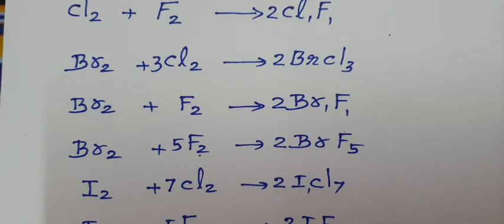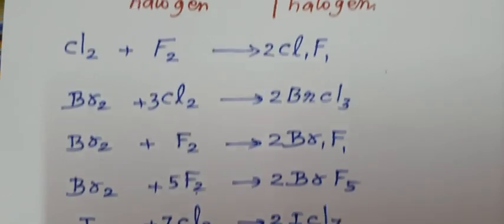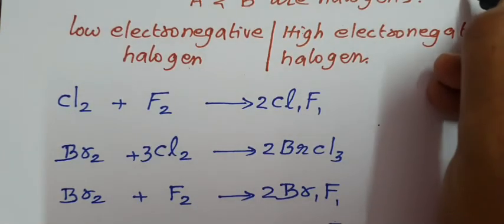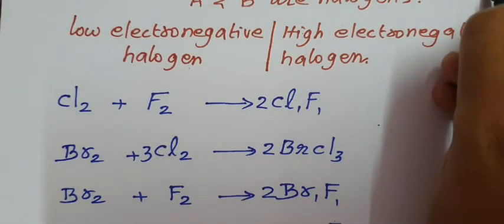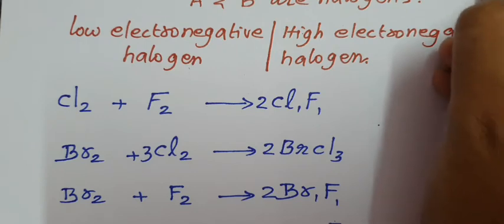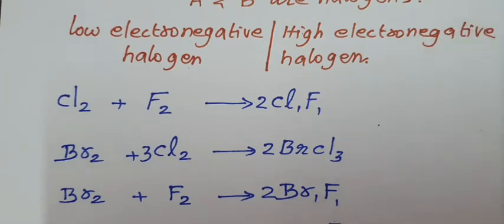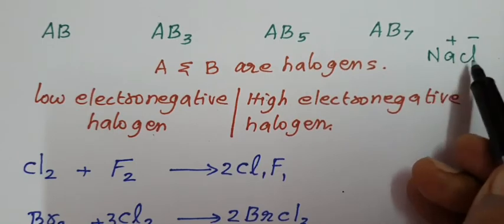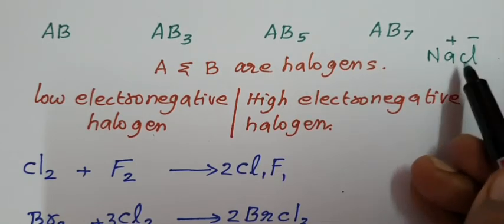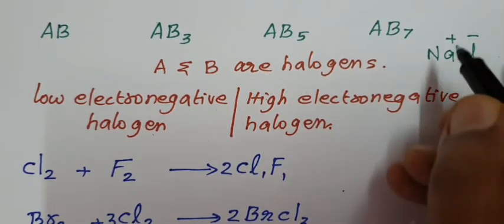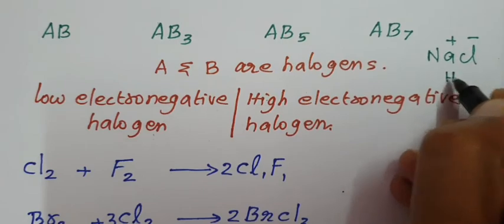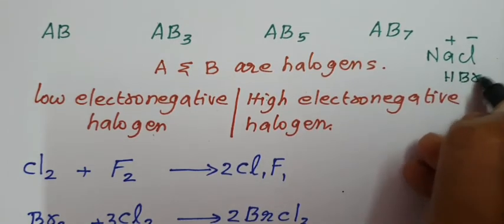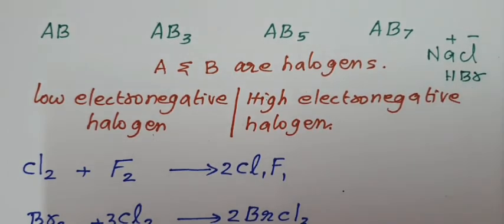How to name all these compounds? Name them like inorganic compounds. For example, NaCl (Na+, Cl−): the first element name is given as-is — sodium — and the second ends with -ide: chloride. Similarly, hydrogen bromide ends with -ide.